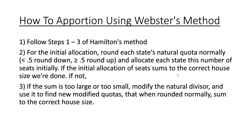Now let's talk about how to apportion using Webster's method. First you would follow steps one to three of Hamilton's method. Remember the first three steps: finding the total population, identifying the house size, using those two things to find your natural divisor, then use your natural divisor to find the natural state quotas.